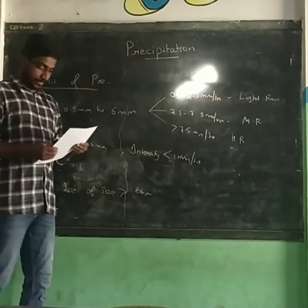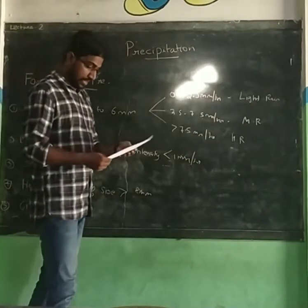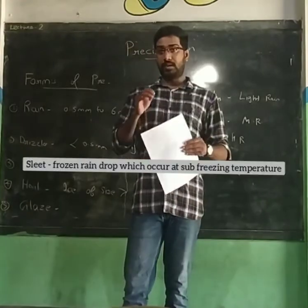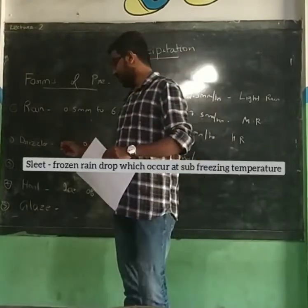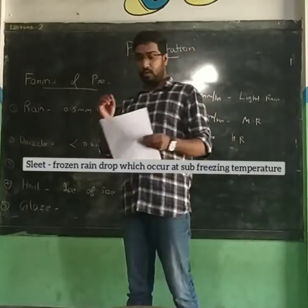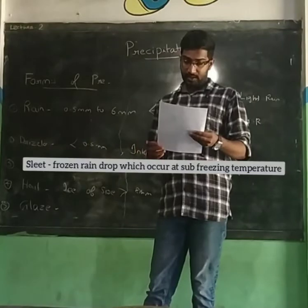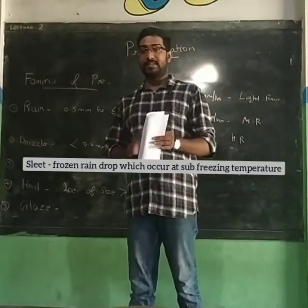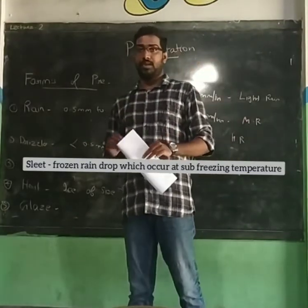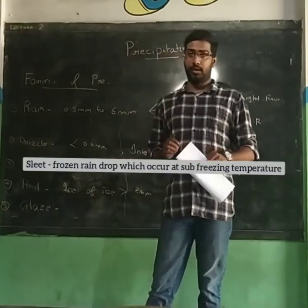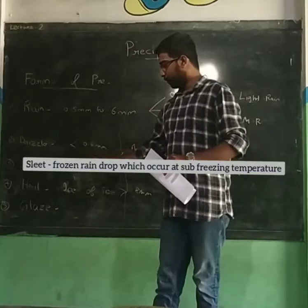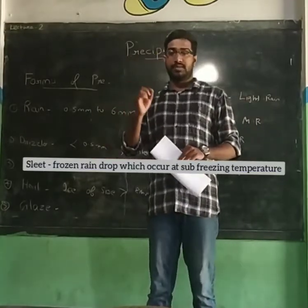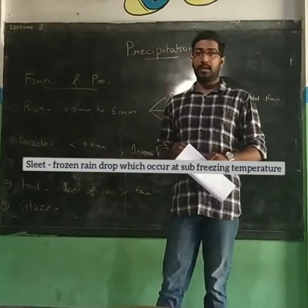Next is sleet — a frozen raindrop. Sleet is basically a frozen raindrop which occurs at sub-freezing temperature. This is an important point: the raindrop is frozen at sub-freezing temperature.